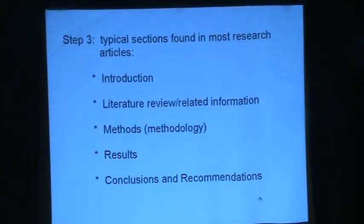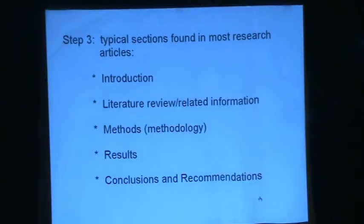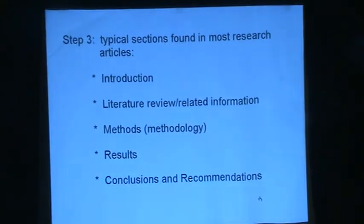Step 3: typical sections found in a research article. There's usually an introduction, although it may not be labeled as such — it may be the first several paragraphs. Then there'll be something like a literature review or related information, followed by a methodology section, a results section, and a conclusions section. The conclusions section usually includes limitations of the research and recommendations for future research.